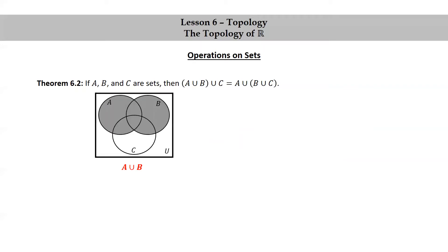Let's look at Venn diagrams to help give evidence that the associativity theorem is true. Here's a Venn diagram of A union B. Notice that we drew three sets A, B, and C, because the theorem involves three sets, and the most general picture with all three sets intersecting each other. To get A union B, we just shade both A and B.